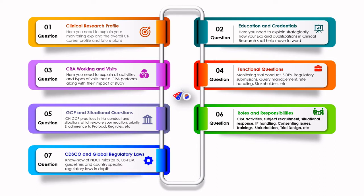The next question area is regulatory. There are global regulatory laws including the FDA. They can ask what were the changes in NDCT rules 2019 — you need to be thoroughly familiar with those rules. You need to be familiar with the Food and Drug Act of 1945, what the distinctions are, what the ethics committee quorum requires, whether there is a requirement for people from outside the institution, and the required number of female participants in an ethics committee. You also need to be well-versed with US FDA guidelines.